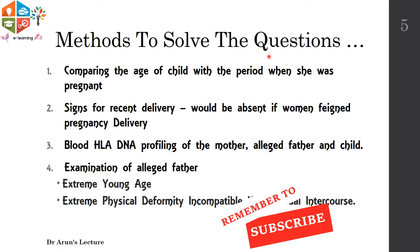In those circumstances, all three — the mother, the alleged father, and the child — can be subjected to blood investigation to determine blood grouping and Rh typing. Even if there is compatibility within those results, further investigations like HLA and DNA profiling can be done.